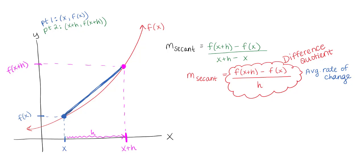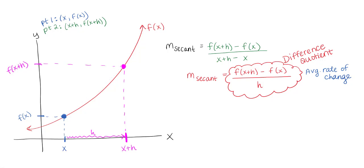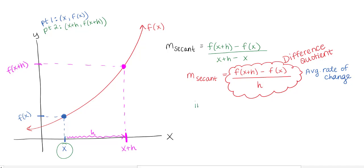My instantaneous rate of change is what my speedometer is actually telling me — my speed at each moment in time. Every time I look down at my speedometer, it tells me right now I'm going 45, 46, 47, or maybe I'm at a stop sign and it's zero. So let's talk about instantaneous rate of change.